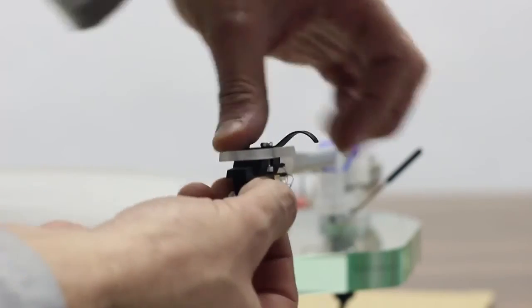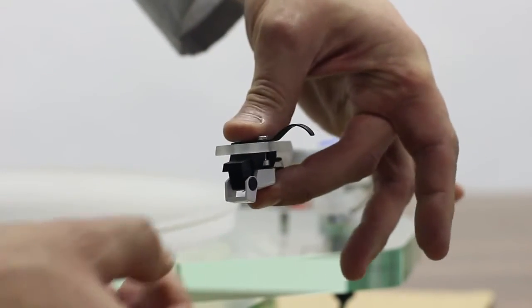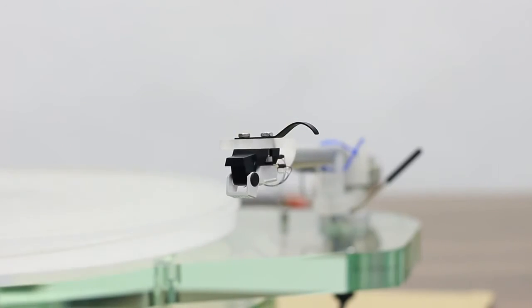Click the stylus onto the cartridge. You can use the pivoting shield to open and close access to the stylus.